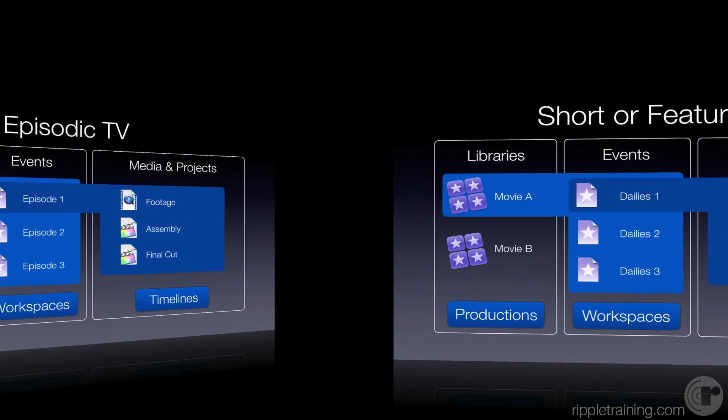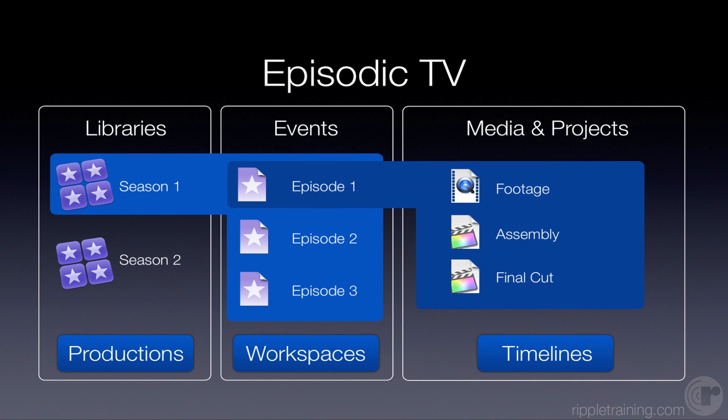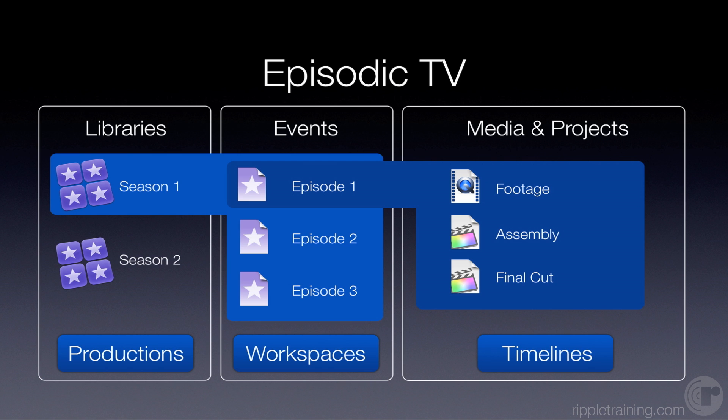Let's look at another scenario. Maybe you're working on an episodic television series — and that's big right now. Big shows on cable have all these seasons and episodes. What are we up to, like season six on Breaking Bad? That's 64, 65 episodes over six seasons. So you could set up your library vis-à-vis seasons — a production library for season one, season two — and within each season you might have the individual episode breakdowns, with one event per episode. And this could handle webisodes too.